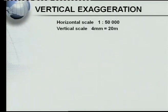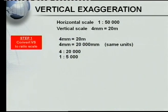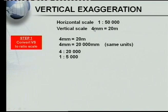So let's have a look at our vertical exaggeration. Here we've got the same cross-section, and I've put the scales down here. Our horizontal scale was 1 to 50,000 — in other words, it was on a topographical map. And the vertical scale: 4 millimeters equals 20 meters. Now let's have a look at how we do this calculation. Step one: convert the vertical scale to a ratio scale. Here we've got 4 millimeters equals 20 meters, and we must convert this to a ratio scale in order to do the vertical exaggeration.